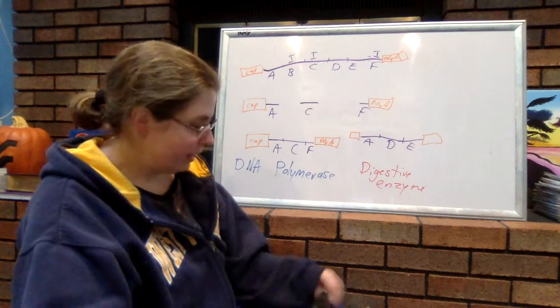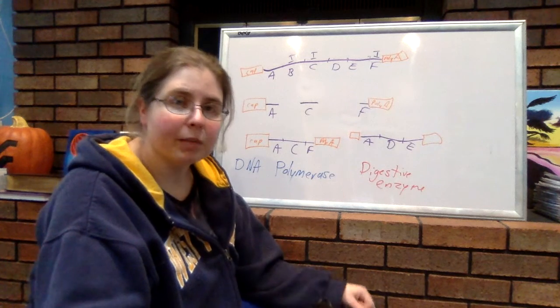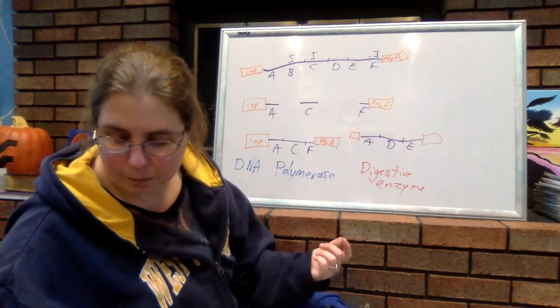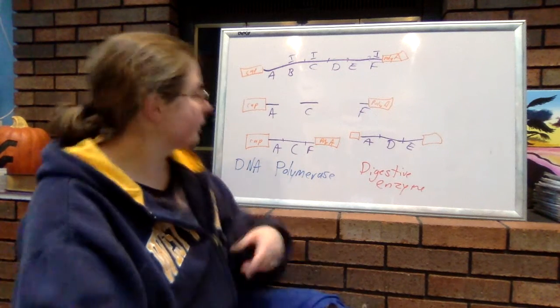So, that's one way that our DNA is economical. By differential introns splicing.